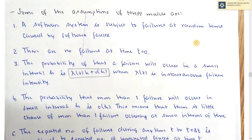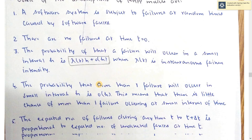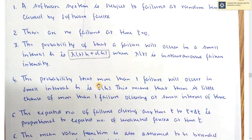There are some assumptions in this model. A software system is subject to failure at random time caused by software fault. At time t equal to 0, there are no failures. When failure occurs, the probability of more than one failure occurring in a small interval h is given by lambda(t)·h + O(h), where lambda(t) is the instantaneous failure intensity and O(h) is the probability that more than one failure will occur in the small interval h.